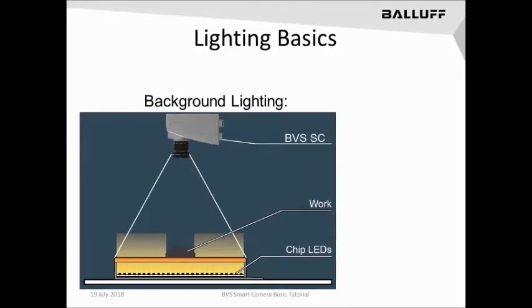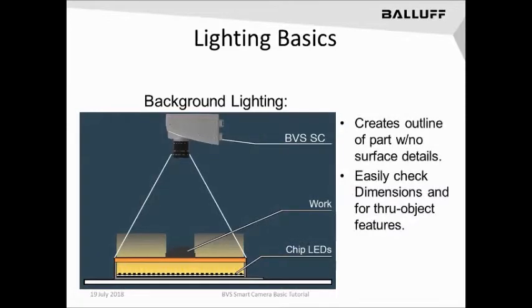Let's start by looking at background lighting or backlighting. This is a technique where a light source is placed behind or under the part or object to produce a high degree of contrast at the edges of the part. This technique can be used to manipulate the edges of the part or, for example, through-hole features in the part to produce sharp edges. That contrast in the sharp edges can then be used specifically for things like dimensioning with a high degree of accuracy and repeatability.